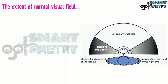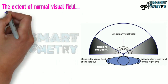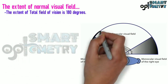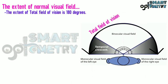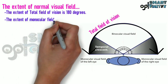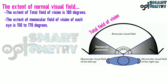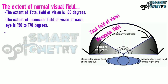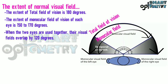The extent of the total field of vision is 180 degrees. The extent of the monocular field of vision of each eye is 150 to 170 degrees. When the two eyes are used together, their visual fields overlap by 120 degrees.